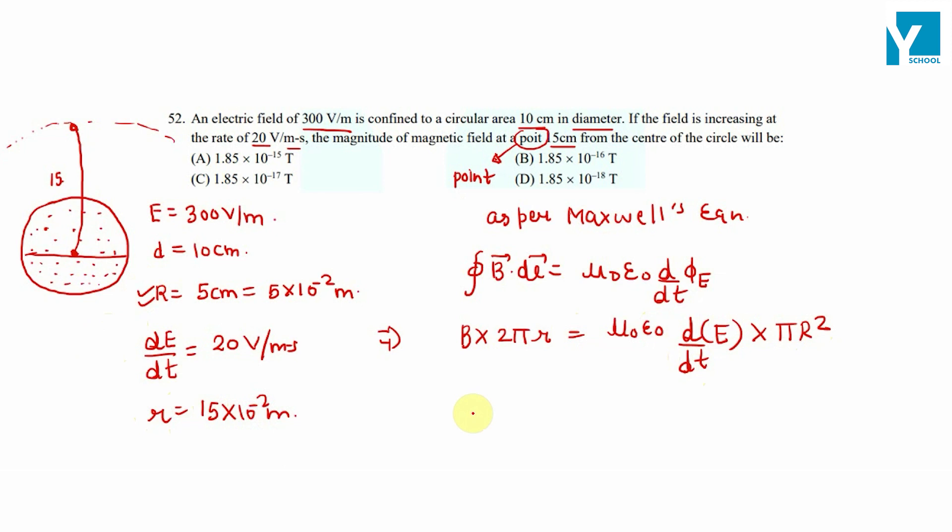So this implies B is equal to mu_0 epsilon_0 times d by dt of E into pi R squared divided by 2 pi r, which equals 1.85 times 10 raised to minus 4 Tesla.